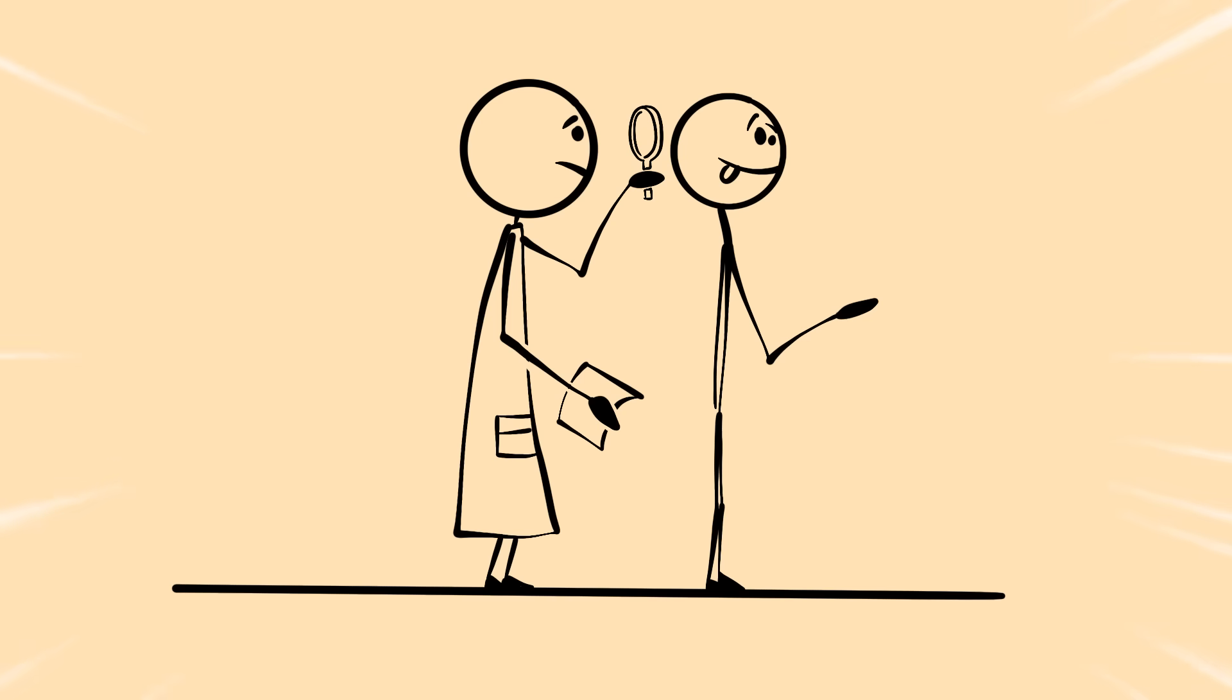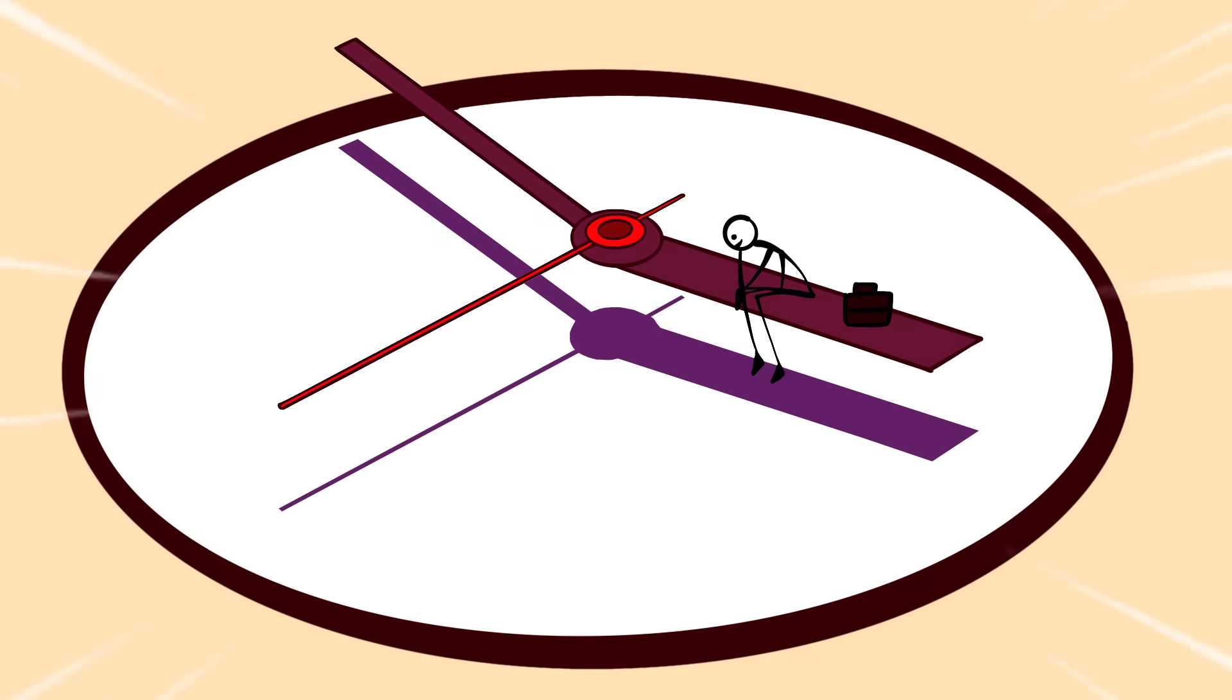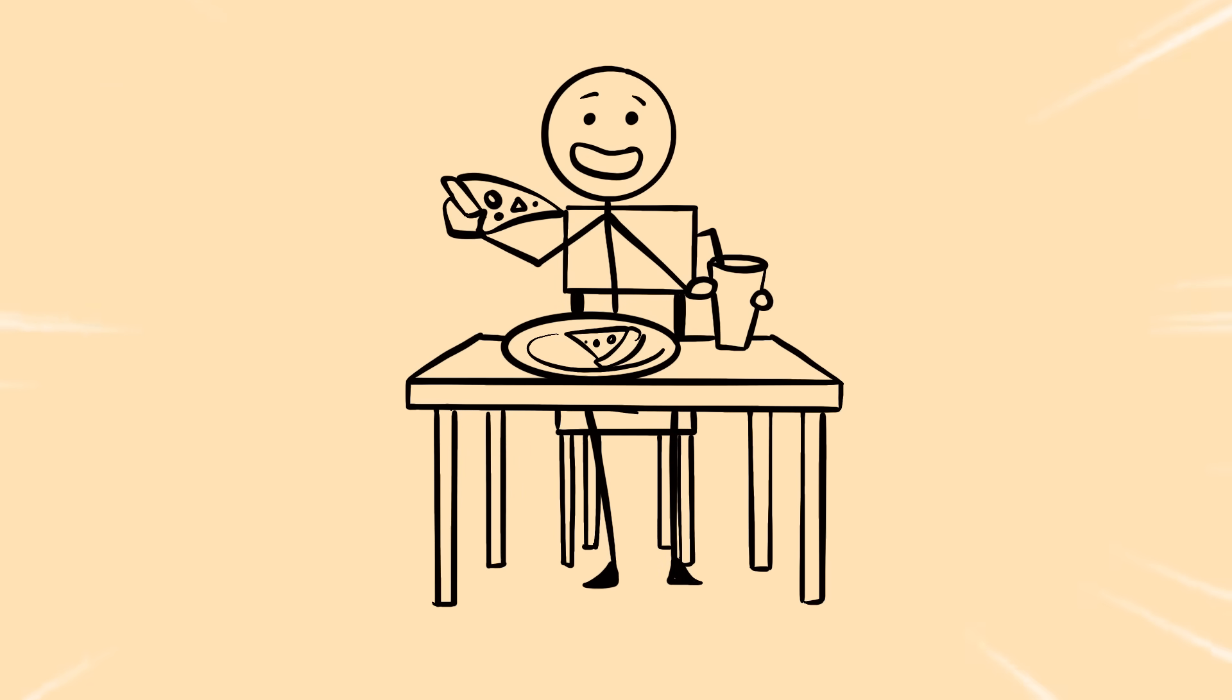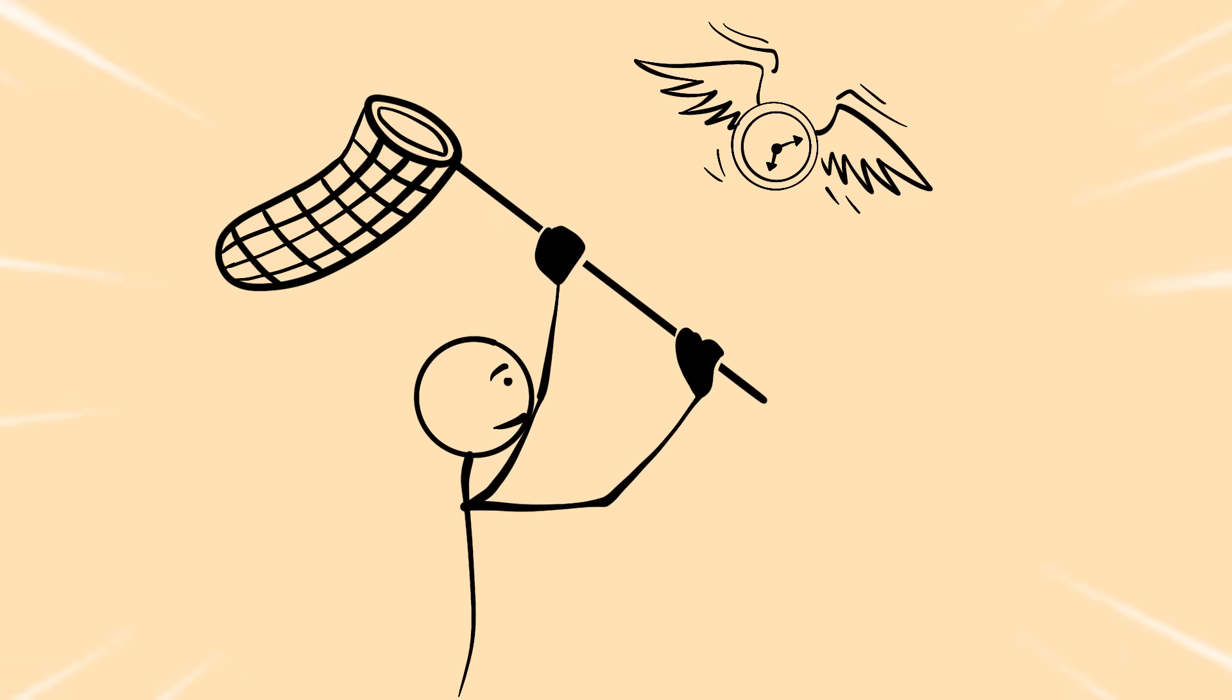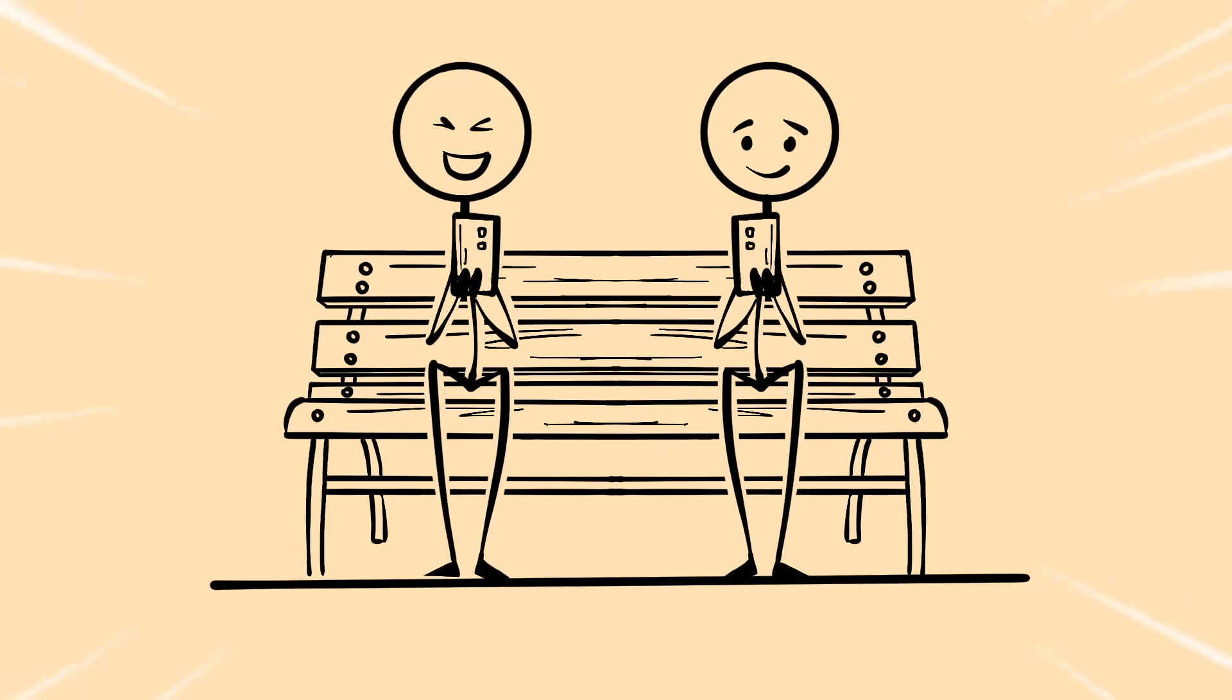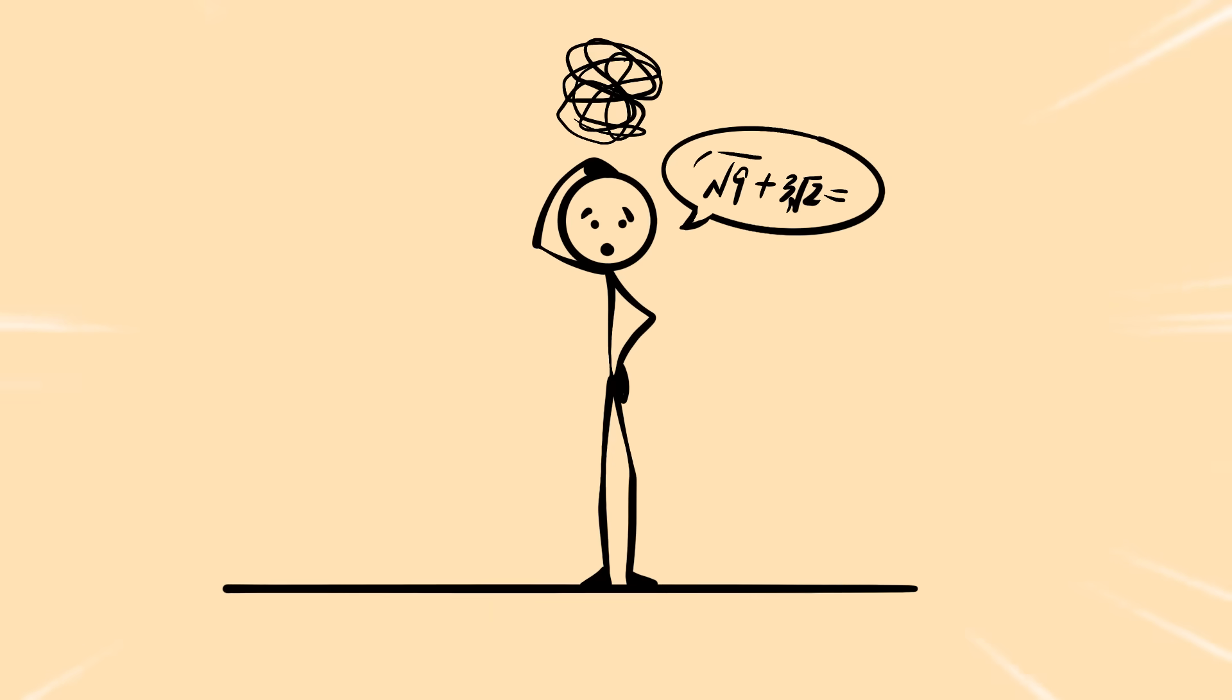For years, scientists thought they understood how humans process time. The old model was simple. When you're engaged in something interesting, time flies. When you're bored, time drags. That's why everyone assumed phone time felt fast because it's entertaining. But the math wasn't mathing.